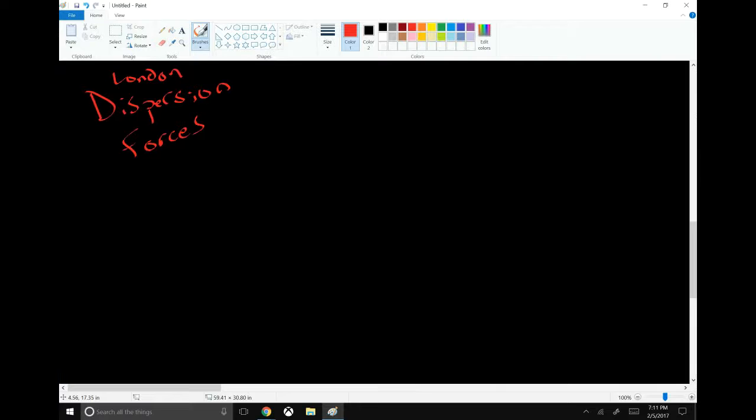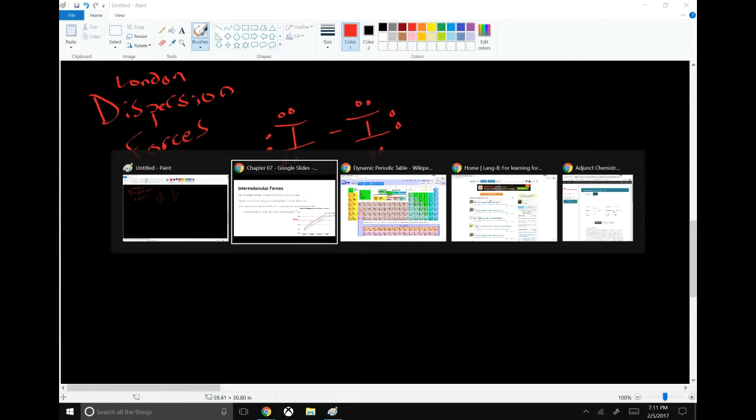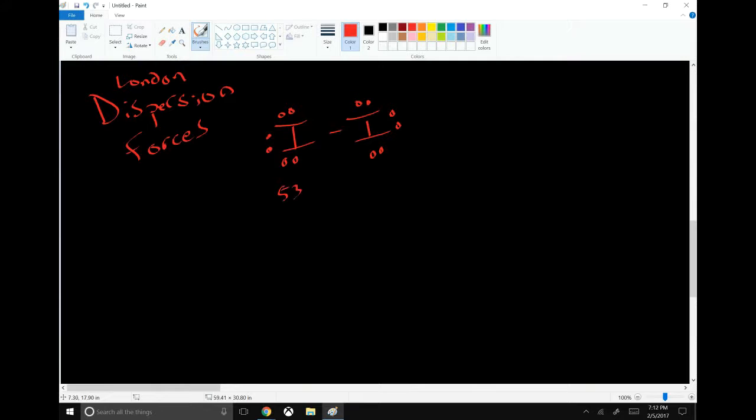This is how you explain why something like iodine is a solid at room temperature. Iodine is just two iodine atoms bound together. It is entirely non-polar. But when you look at the periodic table, element number 53 is iodine, so each iodine atom brings 53 electrons with it. You have 53 electrons here on the left, 53 electrons here on the right, for a total of 106 electrons. That is a lot of electrons flying around that molecule.